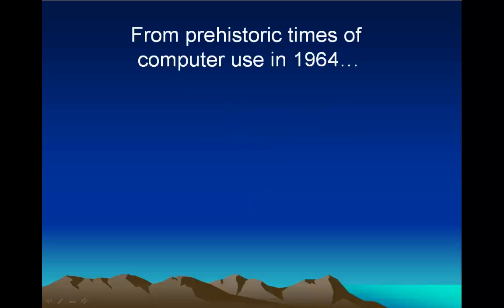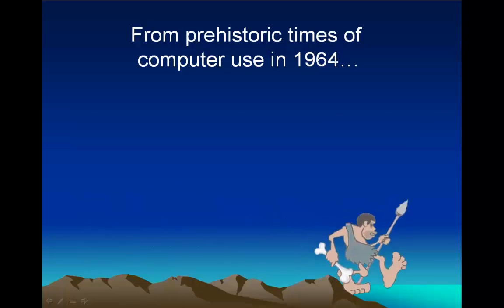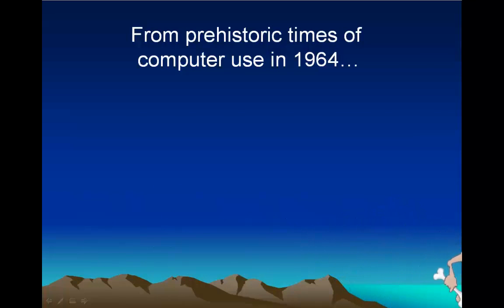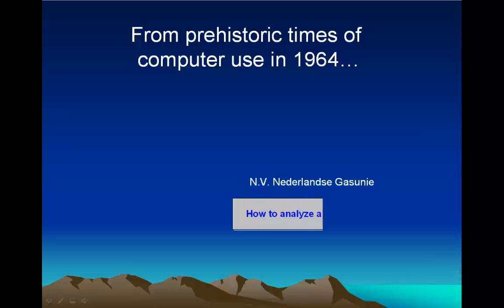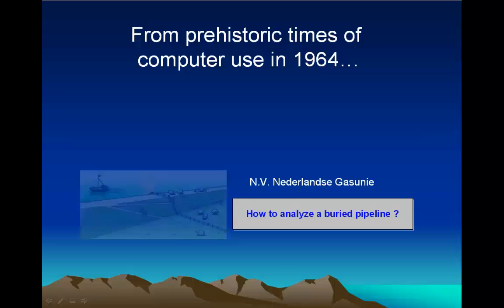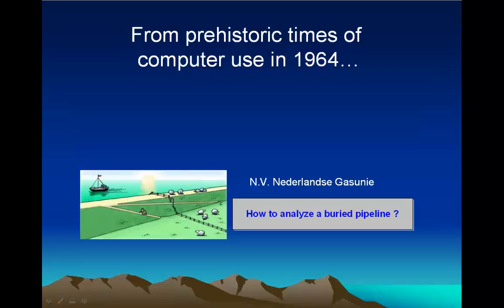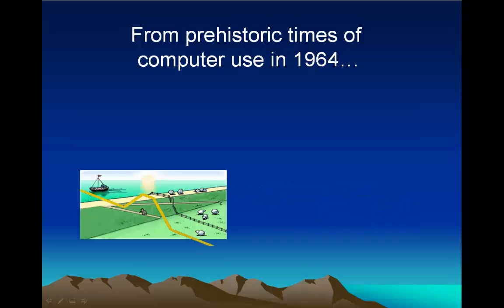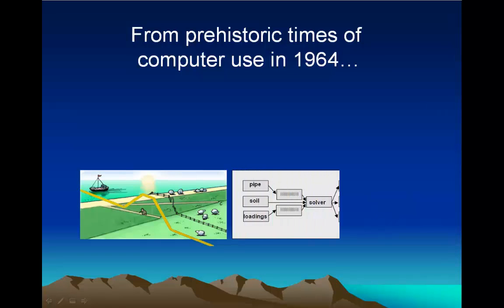The development of the program started in 1964, a year that is generally regarded as the start of computer use in the engineering practice. The beginning of the PLE4WIN development is characterized by a question from our national Dutch gas company, GasUni. The question involved the development of a methodology for the strength and stability analysis of underground pipelines, in order to obtain approval for making dike crossings in the province of South Holland.